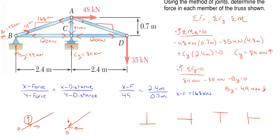Now let's go to joint D. Our last member to find forces for is AD. At joint D I have 35 kilonewtons of downward vertical force and 120 kilonewtons of rightward horizontal force. Looking at the vertical direction I need 35 kilonewtons going upward to cancel with it, and I need 120 kilonewtons going to the left to cancel the 120 going to the right. So I need an up and to the left arrow direction — 35 kilonewtons up cancels the downward force, and 120 kilonewtons left cancels the rightward force. Since member AD is pulling on joint D it is in tension, and the arrow at the opposite end is down and to the right at joint A.